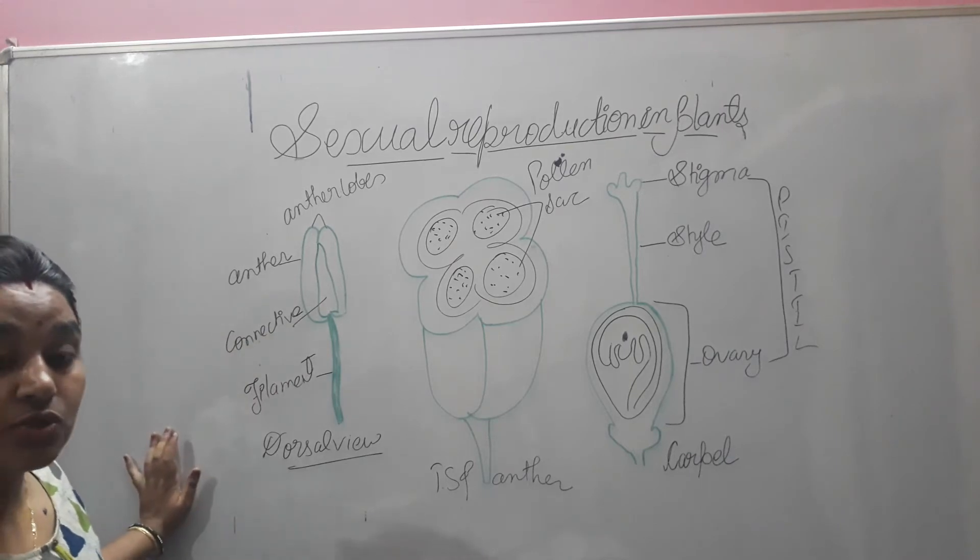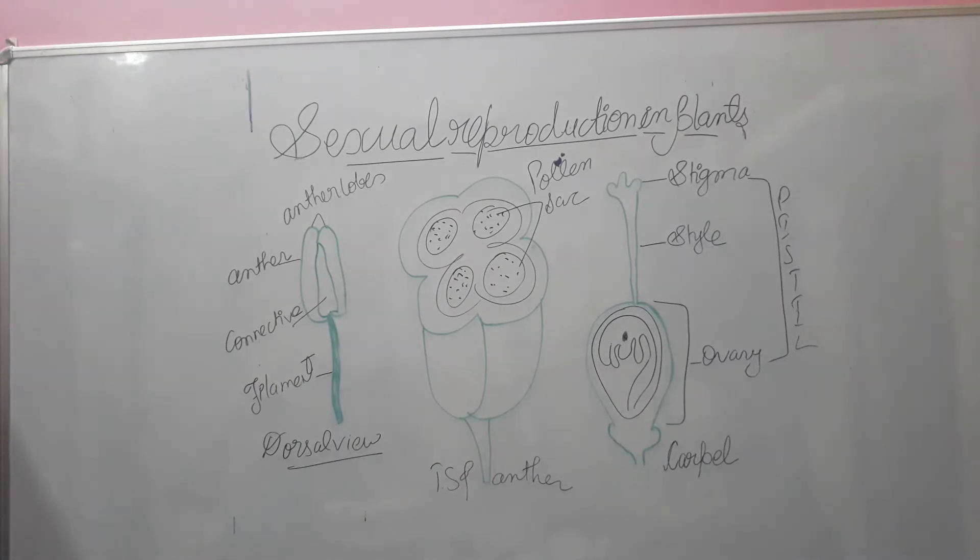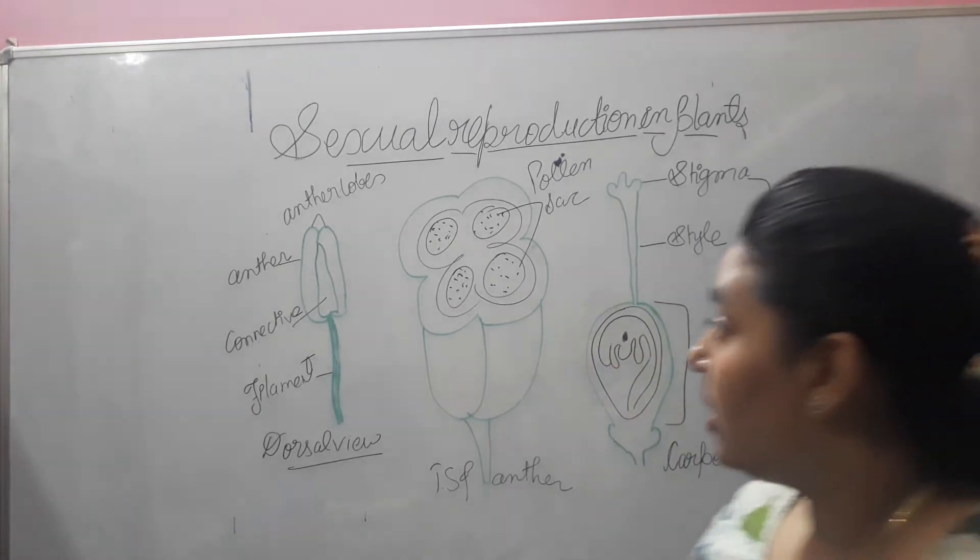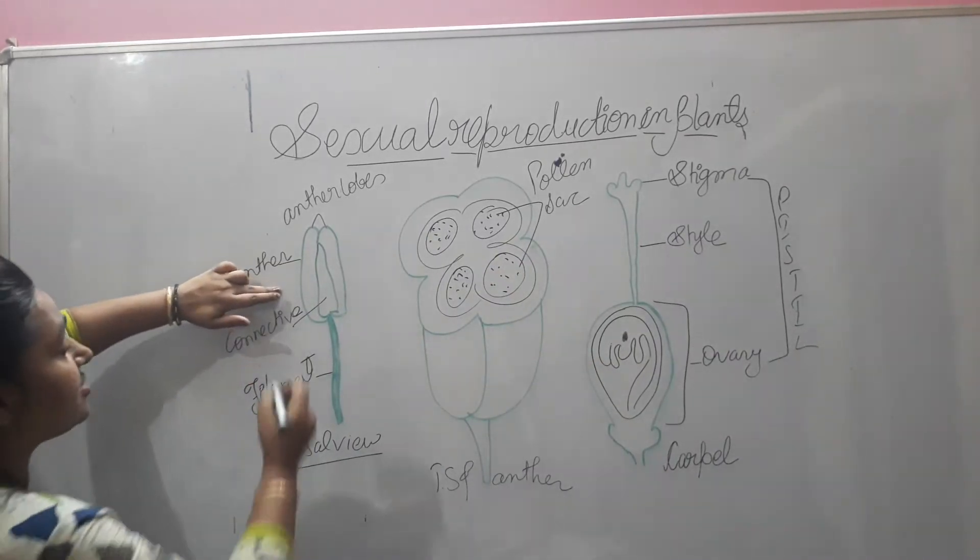Together these make the male reproductive organ which you can see over here and they are called the stamen. So this is stamen structure. Let us see this. This is the dorsal view of it. This is the structure.